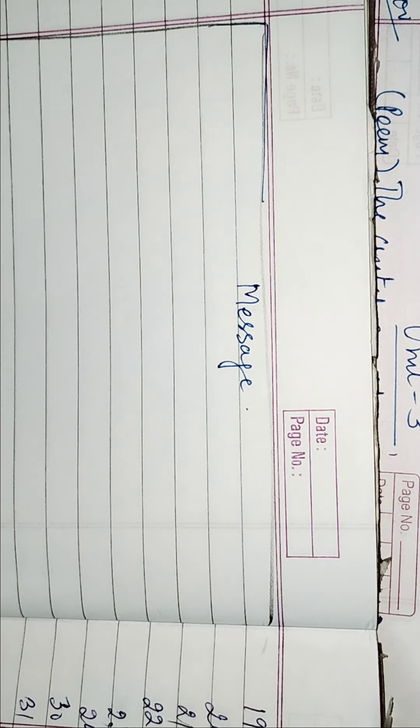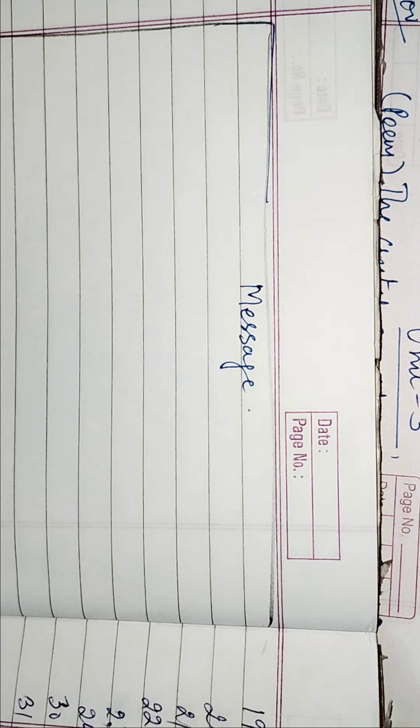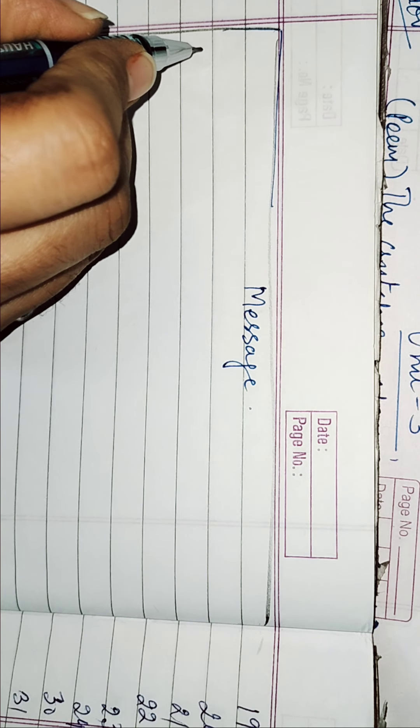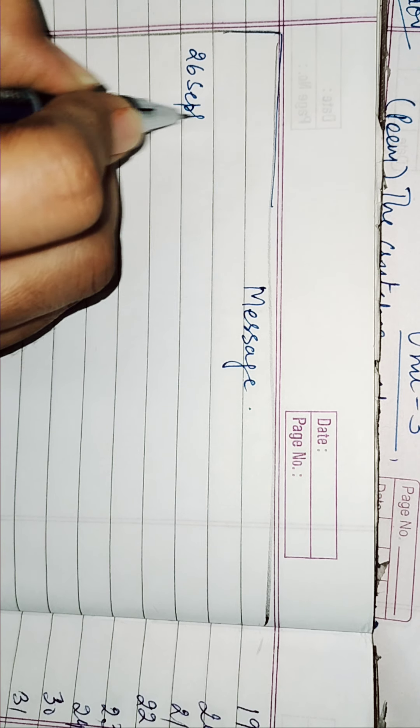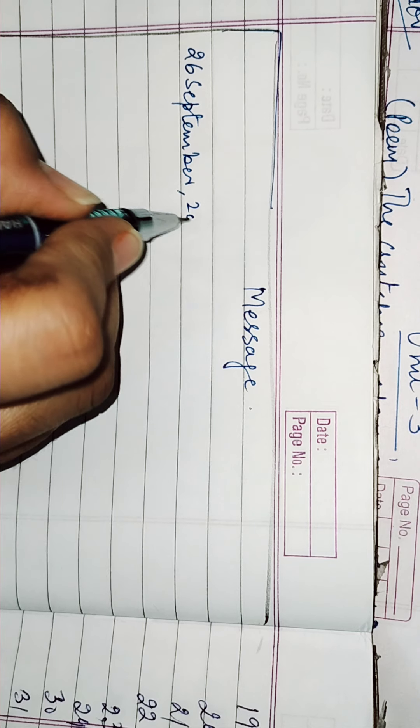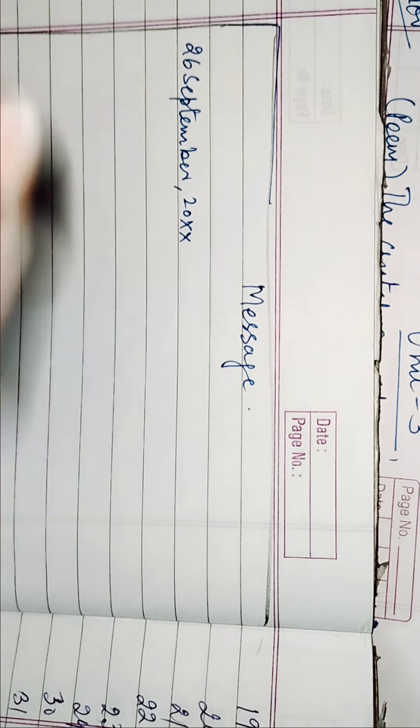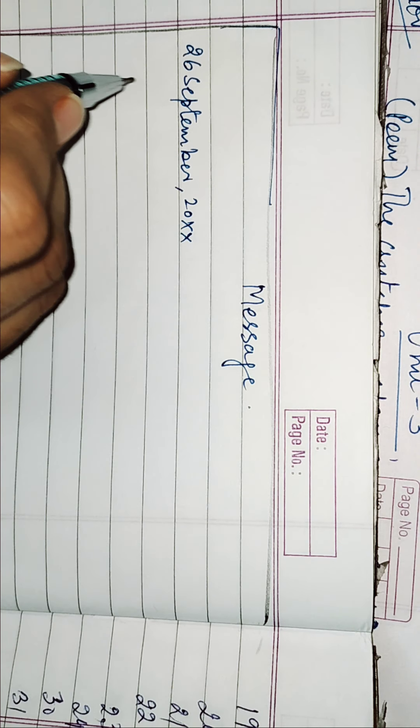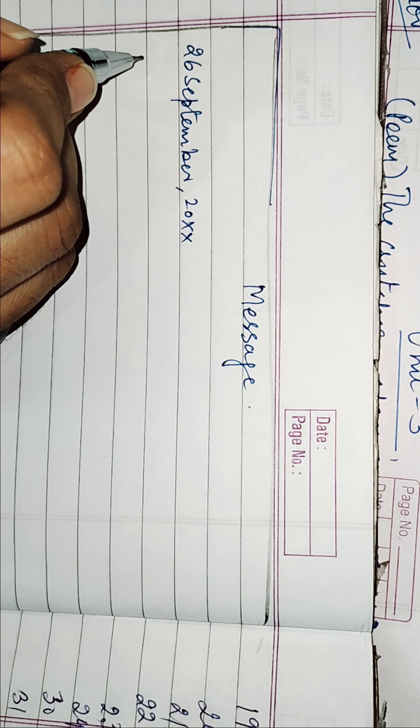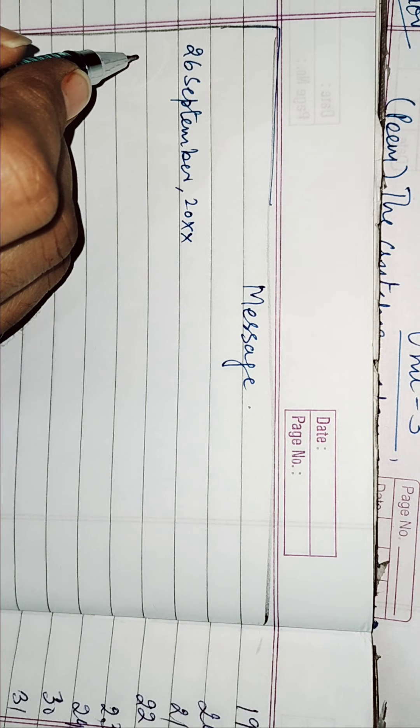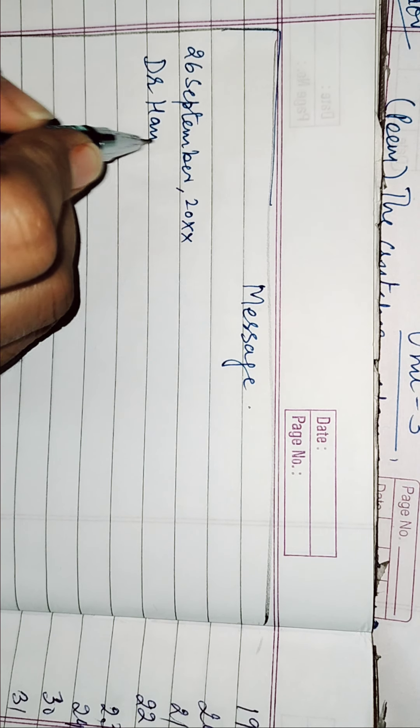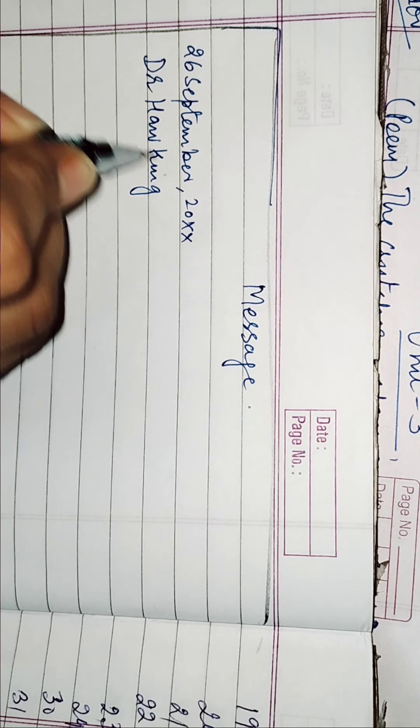Here, we have to write the... I told you to write the date. So, you can write any date. Suppose we are writing 26 September 2020. Okay. Now, here you will address him like this, Dr. Hawking.